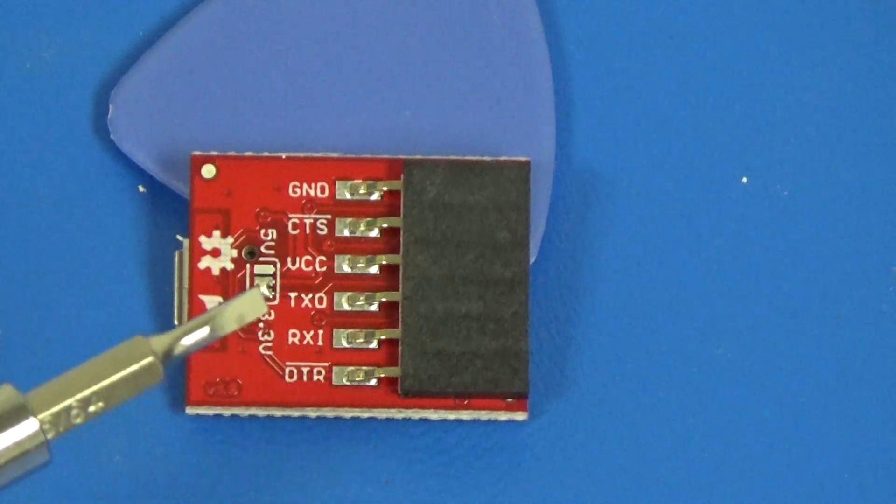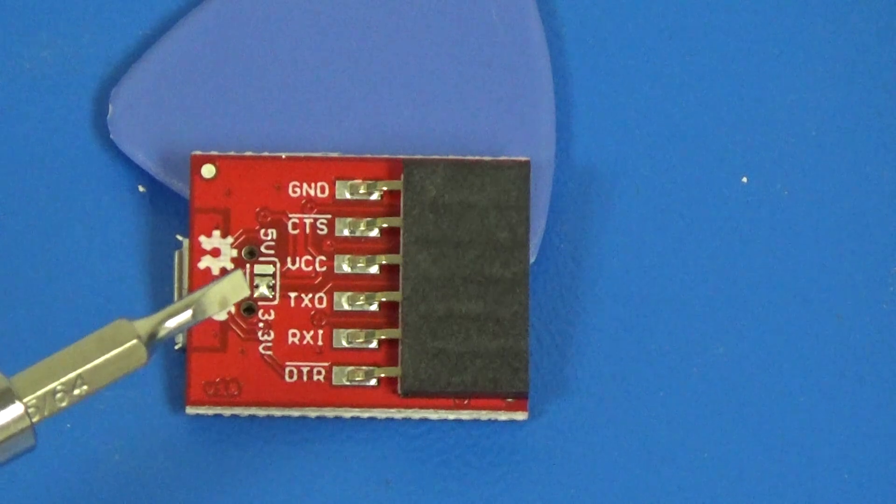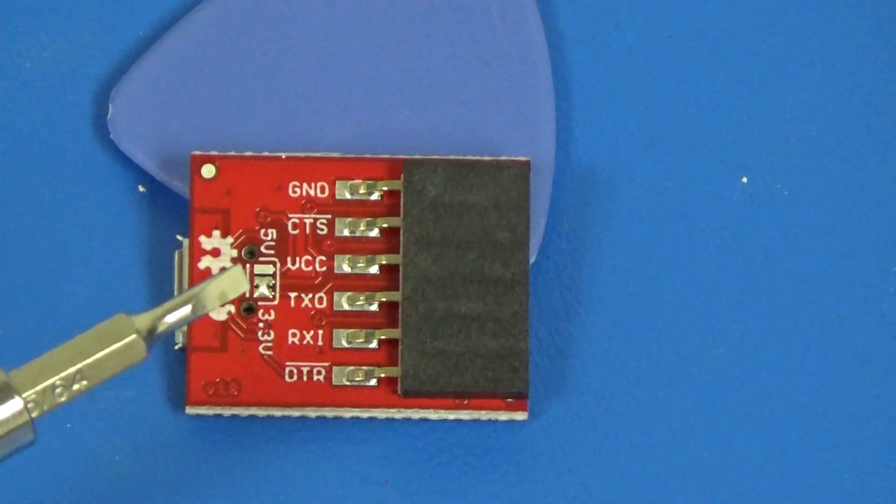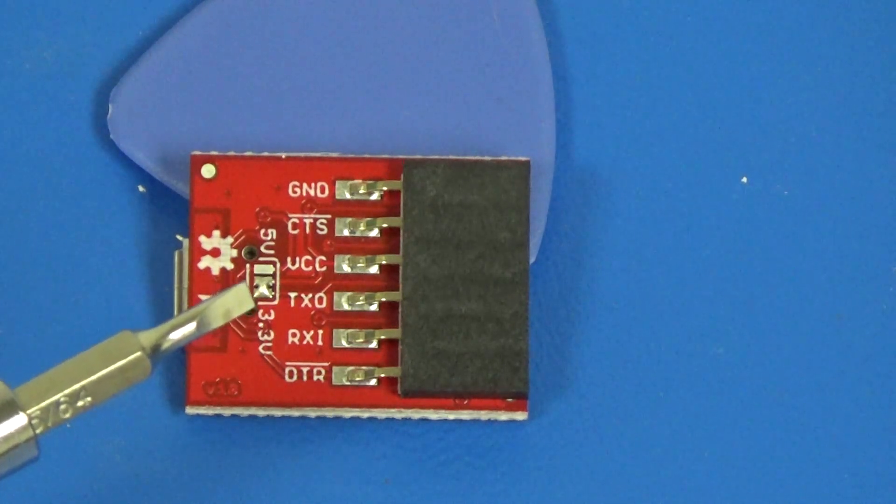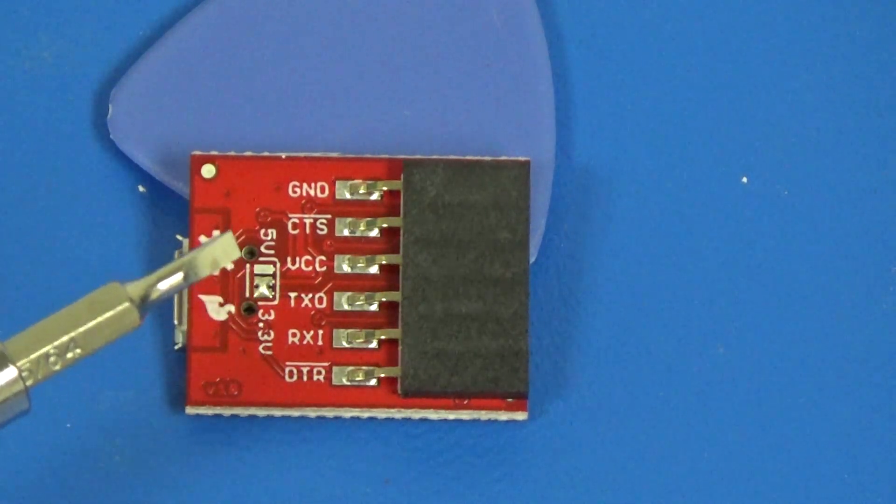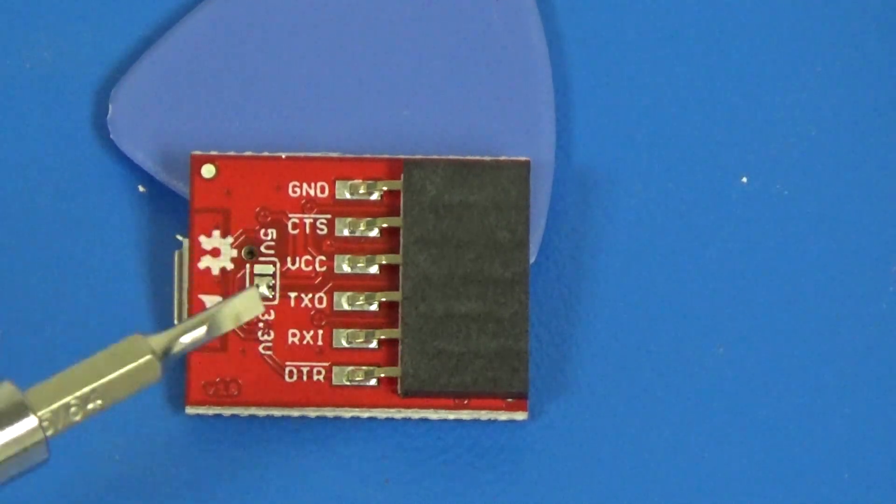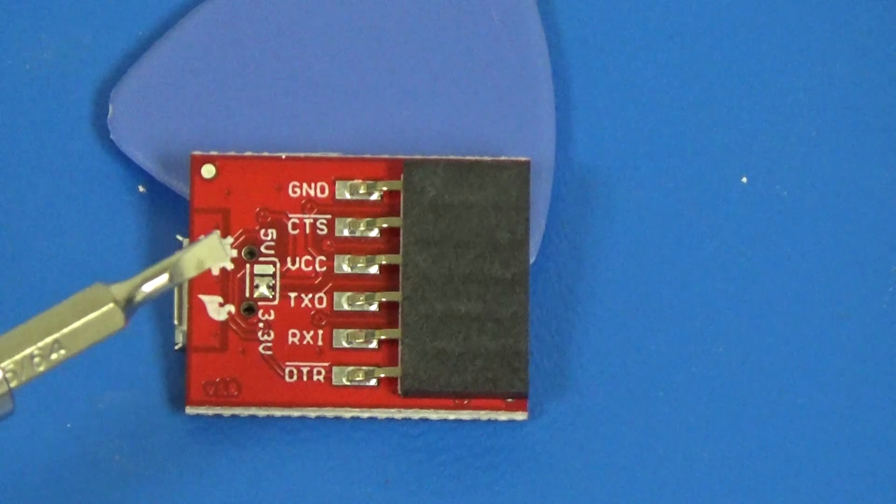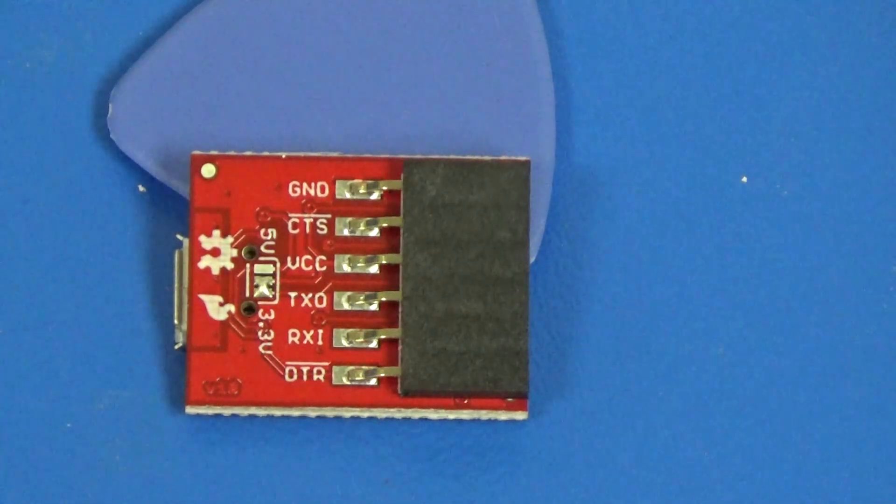It is very important to make sure that if your device has multiple power options it is set to 3.3 volts, which you can tell here because the pad in the middle and the one closest to 3.3 volts are soldered together and the 5 volt is not connected. So it's very important to double check that or you could damage your Sonoff device.